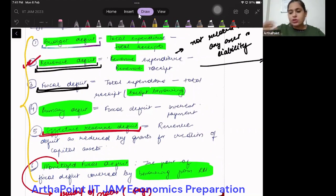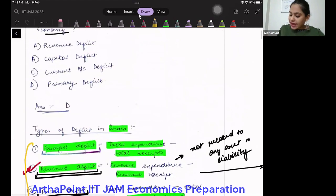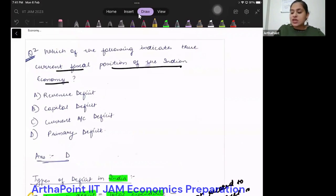So these are the main deficits that one must know, these six deficits. Of course, I will share these notes with you. But just for now, you should know these six deficits. Now, on the basis of that, we understand that the question is asking the true fiscal position.